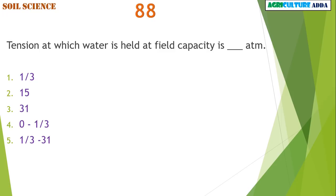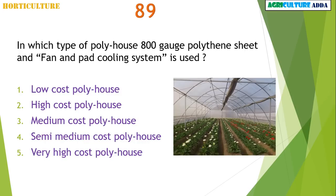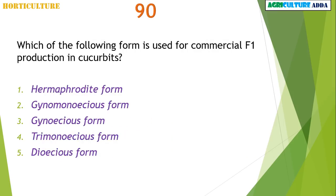Tension at which water is held at field capacity is 1/3 or 0.3 atmosphere. In which type of poly house is 800 gauge polythene sheet and fan-and-pad cooling system used? Medium cost poly house. Which of the following forms is used for commercial F1 production in cucurbits? Gynoecious form.